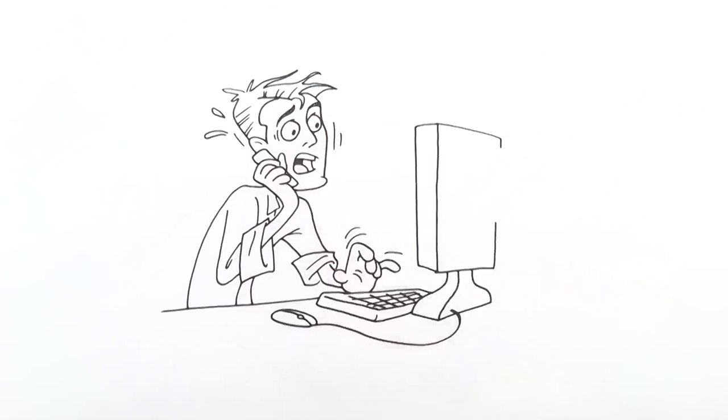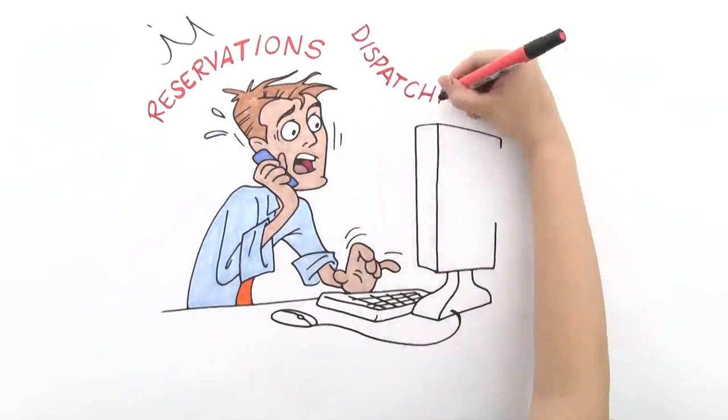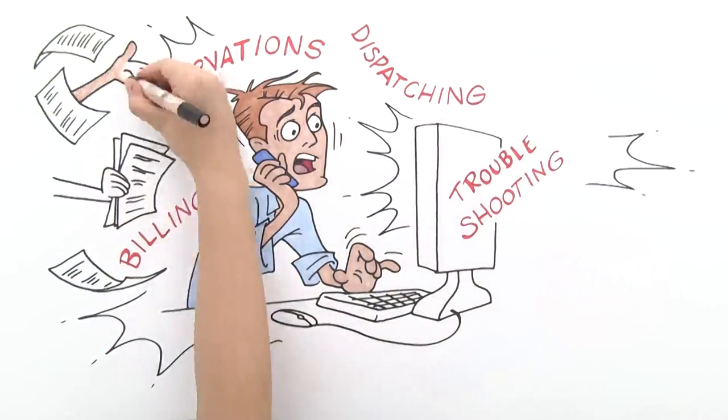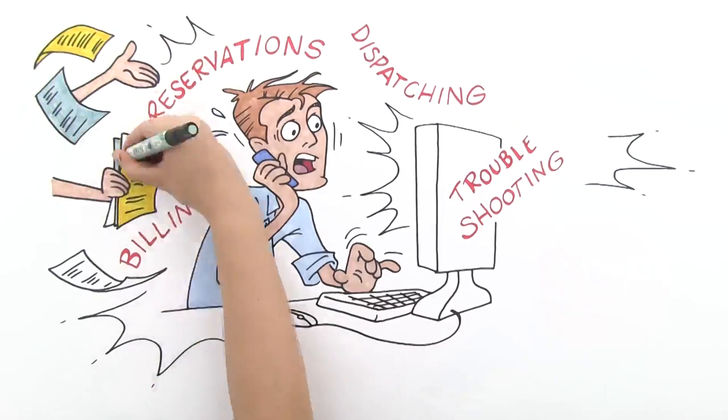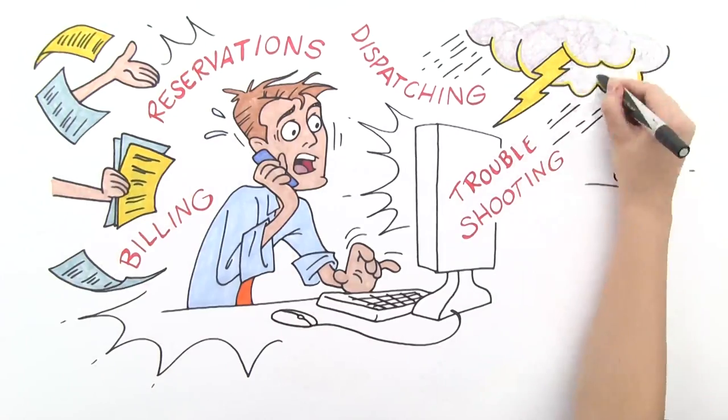Multiply Bob's worry by each client and affiliate and add the difficulty of making the reservations, dispatching, billing, and troubleshooting with each individual affiliate that he might use, and Bob is finding himself in a whirlwind of paperwork and his small staff struggling to weather the storm.